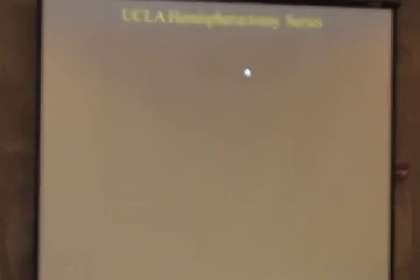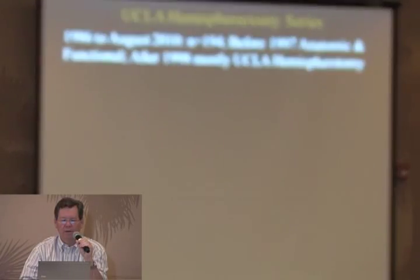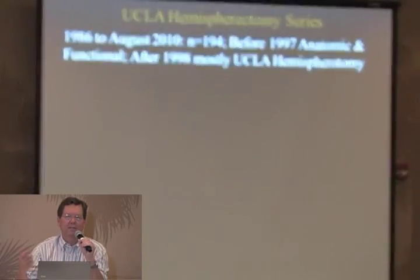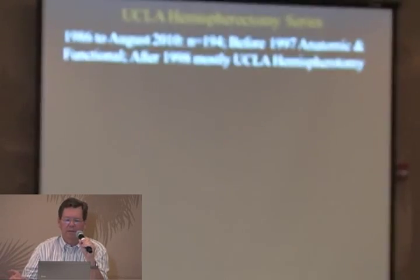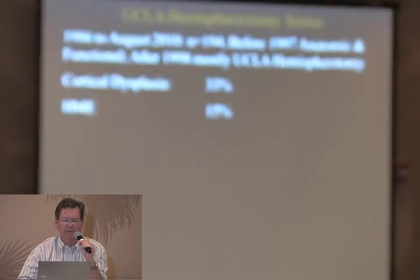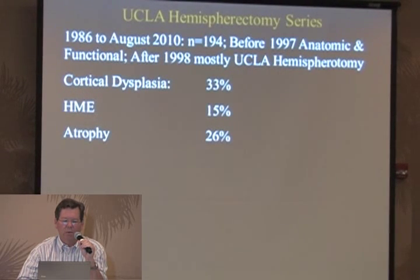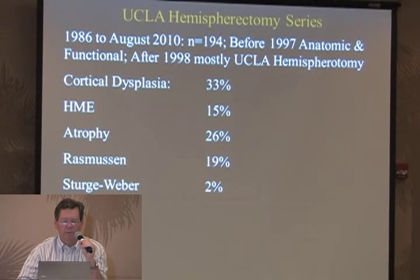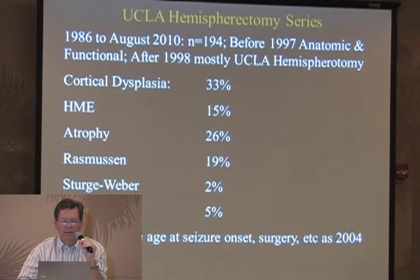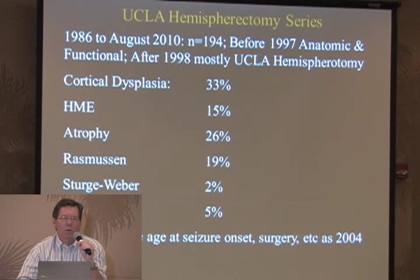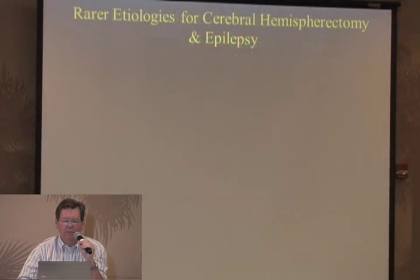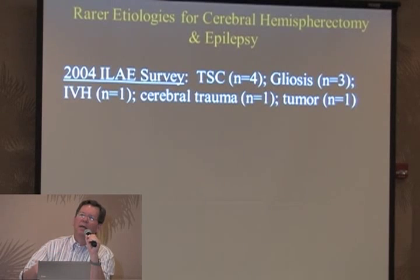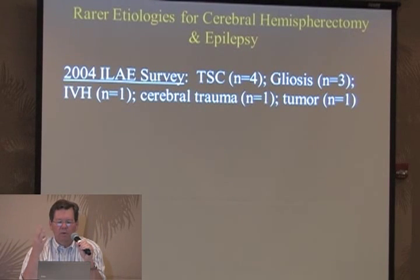Our UCLA series is now just over 200 cases over 20-plus years. The profile is not very different from the 2004 general survey - not quite half are some cortical dysgenesis, and we're a little higher on Rasmussen's. So even over a 20-year period, we see the same profile as the 2004 survey.